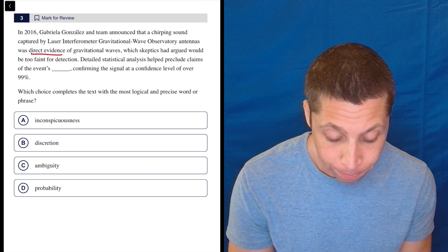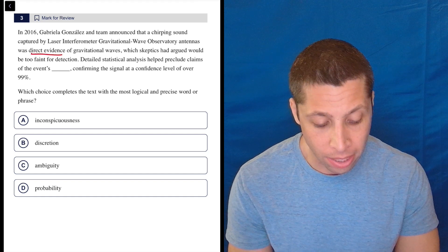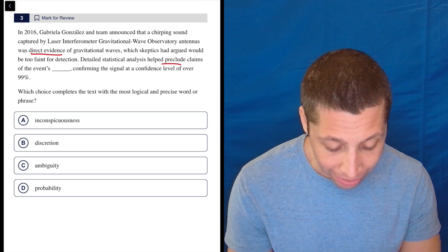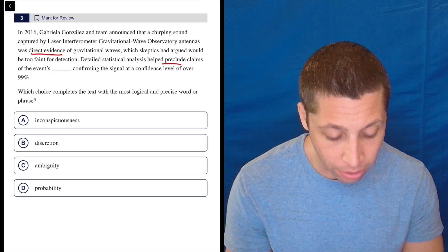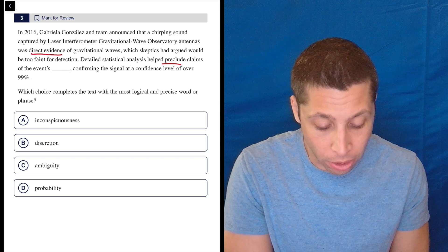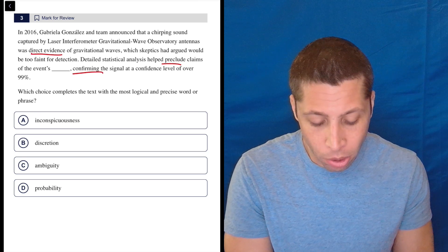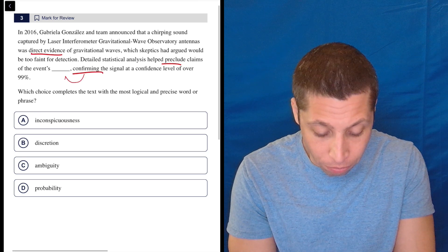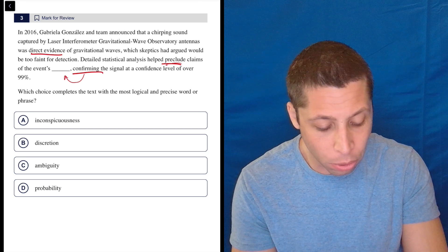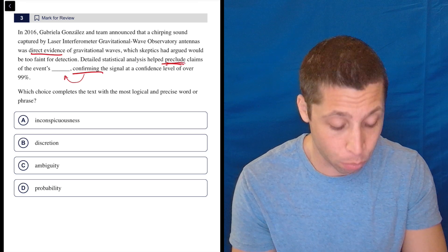So they found evidence. Detailed statistical analysis helped preclude - a tough word - claims of the event's blank, confirming the signal at a confidence level of over 99%. Strong words here, we're confirming it. So are we just saying we want to confirm it? Is that what this blank is? Well, the word preclude is a little weird. That's a bit of a negative word here.